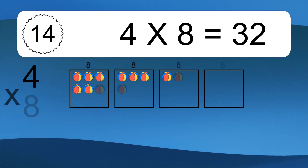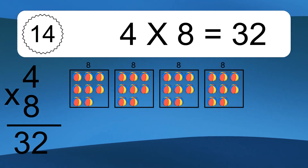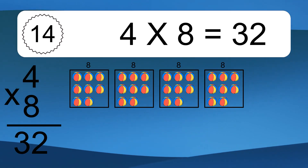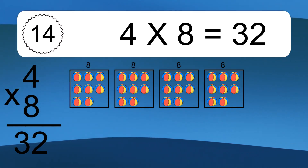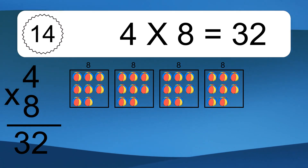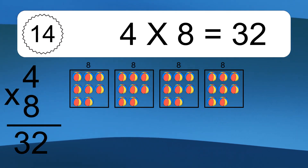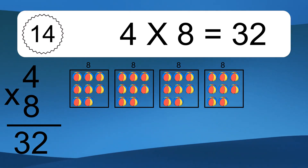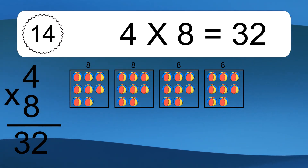4 times 8 equals what? 4 times 8 equals 32. We have 4 boxes, and each box has 8 colorful balls inside. If you count all the balls in all the boxes together, you will have 4 times 8 balls. This equals 32 balls.